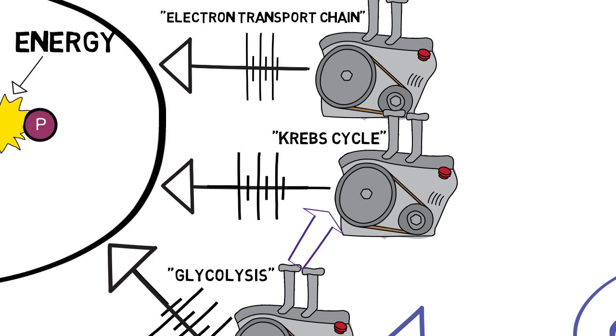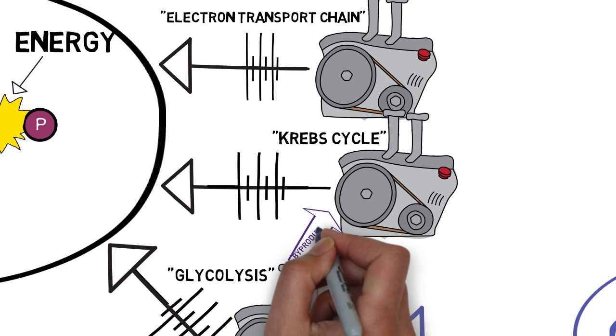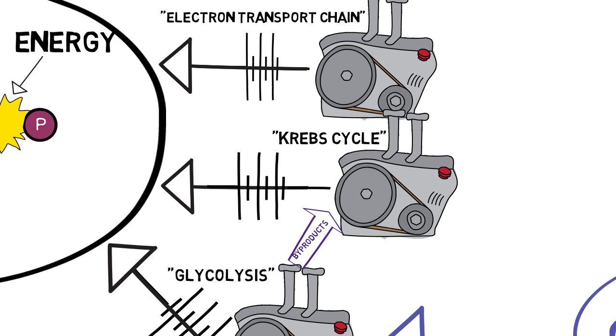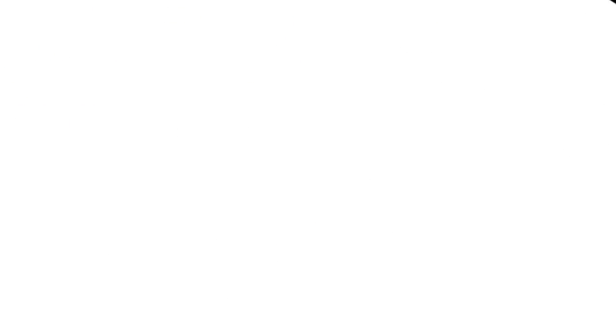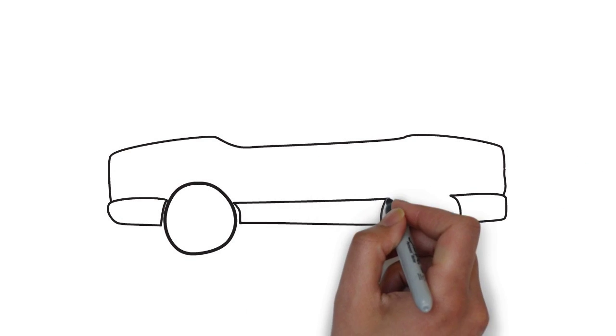Then the other two generation systems turn those byproducts from the first generator into more ATP.